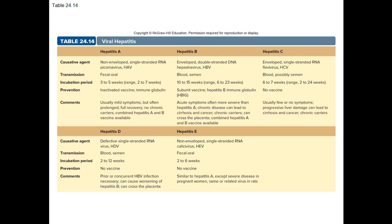Hepatitis C has similar but milder symptoms than HAV and HBV. The causative agent, hepatitis C virus, is an RNA flavivirus. The infection is due to contaminated blood — usually few symptoms, but progressive liver damage, with liver cancer in 10 to 20% of cases; chronic carriers exist. Blood exchange, illegal drug use, unsterile tattoo needles, and shaving razors can pass on the disease. Unfortunately there is no vaccine. Interferon treatment and ribavirin — an antiviral nucleotide drug — slow disease progress, but there's a new reported cure using Zepatier, a combination of elbasvir and grazoprevir, both protease inhibitors that block viral replication.